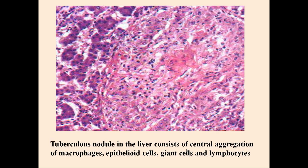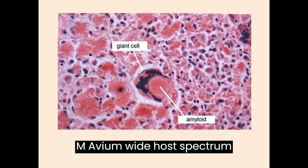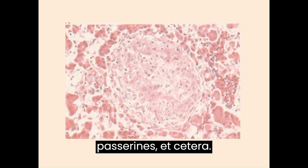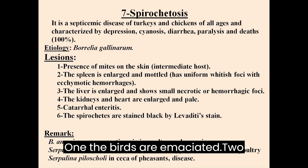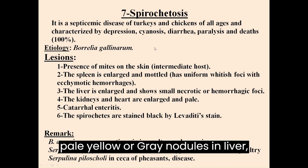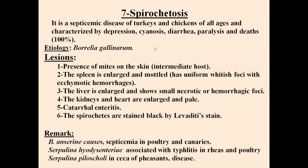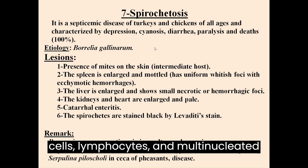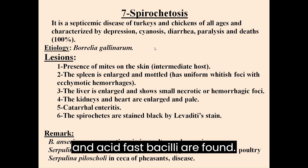Mycobacteriosis is a chronic progressive disease of a variety of bird species, characterized by unthriftiness, loss of weight, diarrhea, etc. M. avium has a wide host spectrum: poultry, pigeons, raptors, ratites, wild birds, passerines, etc. Gross lesions: emaciated birds with pale yellow or gray nodules in liver, spleen, intestine, bone marrow, lung and heart. Microscopically, nodules consist of caseous necrosis surrounded by macrophages, epithelioid cells, lymphocytes and multinucleated giant cells. Fibrosis and acid-fast bacilli are found.